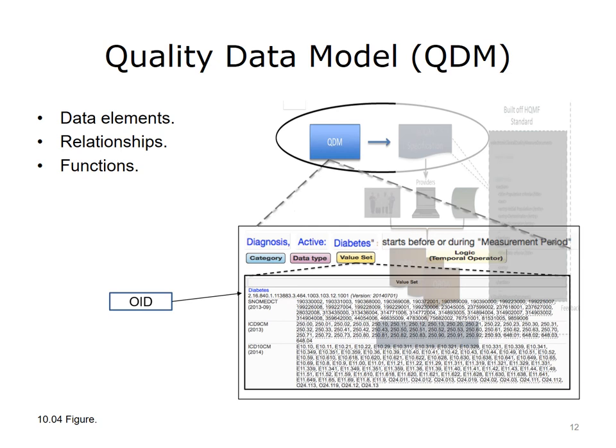The Diagnosis Active Diabetes Data Type Value Set, shown here, is uniquely identified by its OID, Object ID. Members of the value set are shown in three version-specific code sets: SNOMED-CT, ICD-9, and ICD-10. This example demonstrates the importance of vocabularies and terminologies from standardized code sets in defining data types and attributes as value sets, which form building blocks of the quality data elements described in more detail in the next slide.